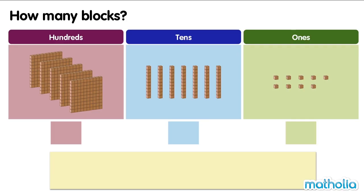How many blocks? Let's count the blocks in each place. There are 5 hundreds, 7 tens, and 9 ones. Let's add the place values of each digit.